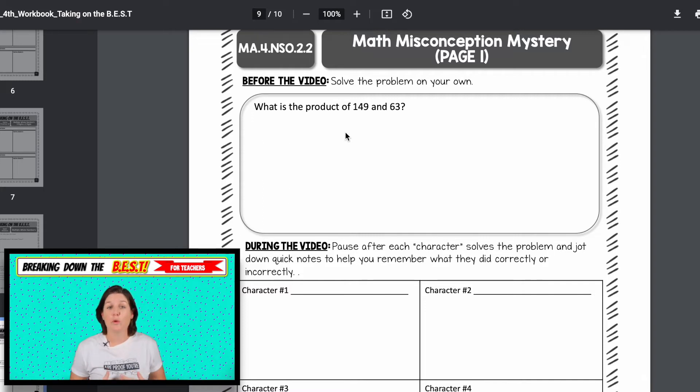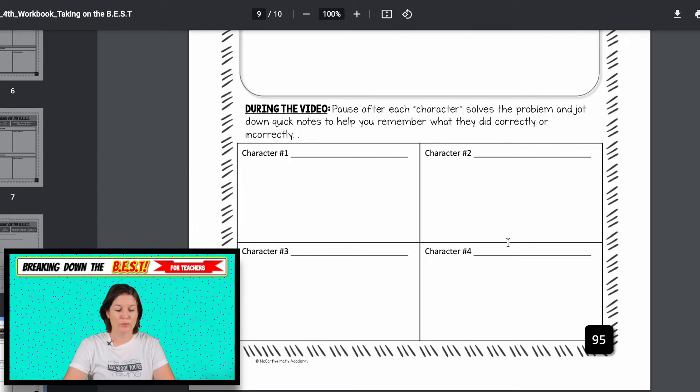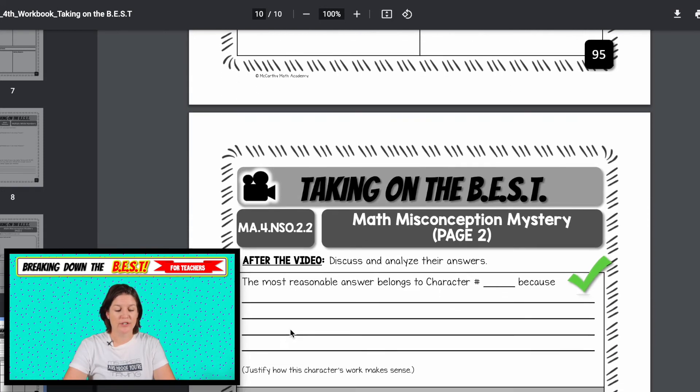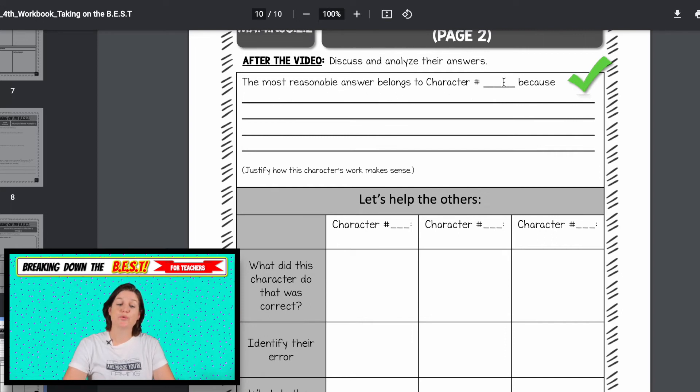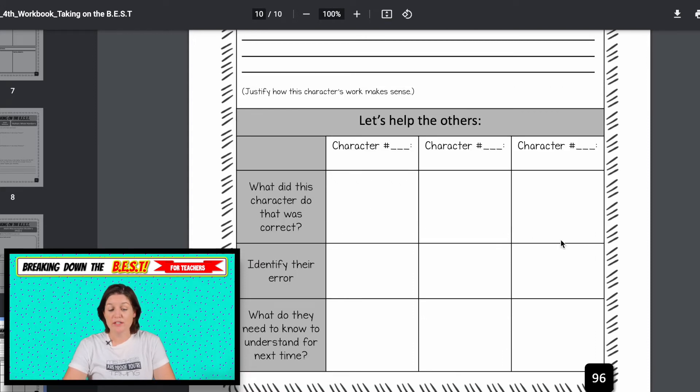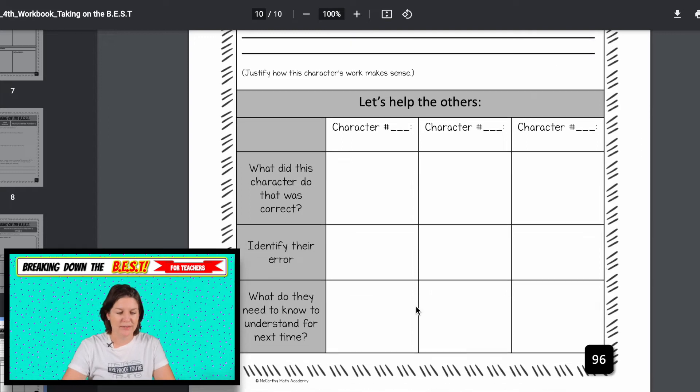By the way, for the video, it walks them through the whole process. Your students solve the problem independently, or with their group, you can choose. Then four characters, which are me dressed up as silly characters, will solve the same problem. Three of them make mistakes. One of them has the most reasonable answer. And your students have to discuss, decide, justify who's correct, who is not, and why. So this is where they do their work. Here's where they jot down notes during the video as they're watching it. And then after, towards the end of the video, they'll be able to discuss and analyze their answers, the student, the character's answers. So the most reasonable answer belongs to who and why. For the other characters, what did they do that was correct? Not everything about it was incorrect. What was something finding the good, finding the value in what they did do? Because we want to train our students to think about their own work like that, like not beat themselves up over when they make a mistake, and instead focusing on what they did that was correct, what was their error, and what do they need to know for next time. These are so much fun.